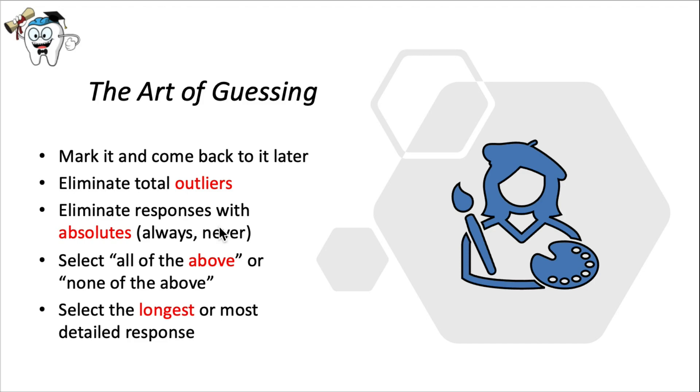You can also eliminate answers with absolute words like always and never, because very rarely is something always or never true.